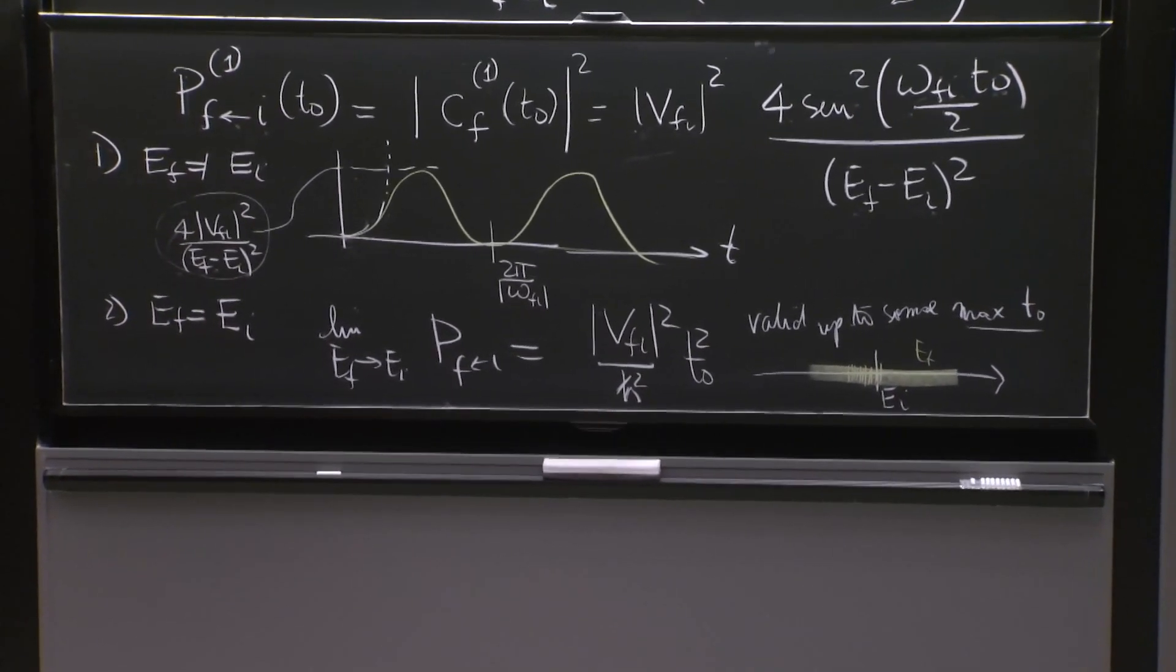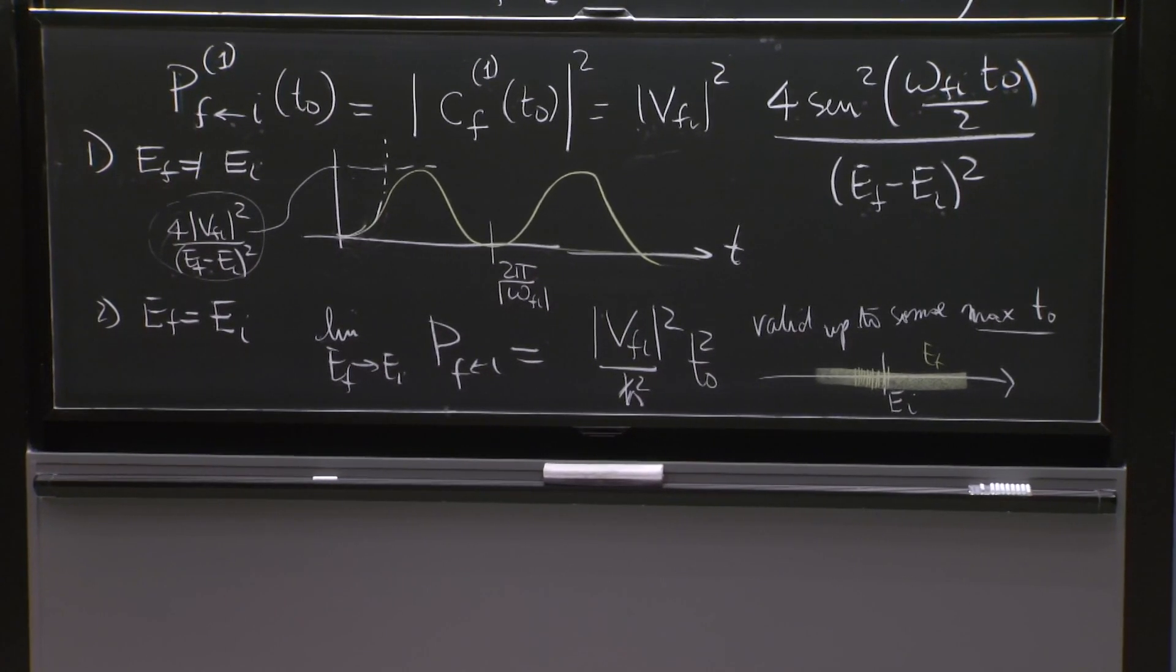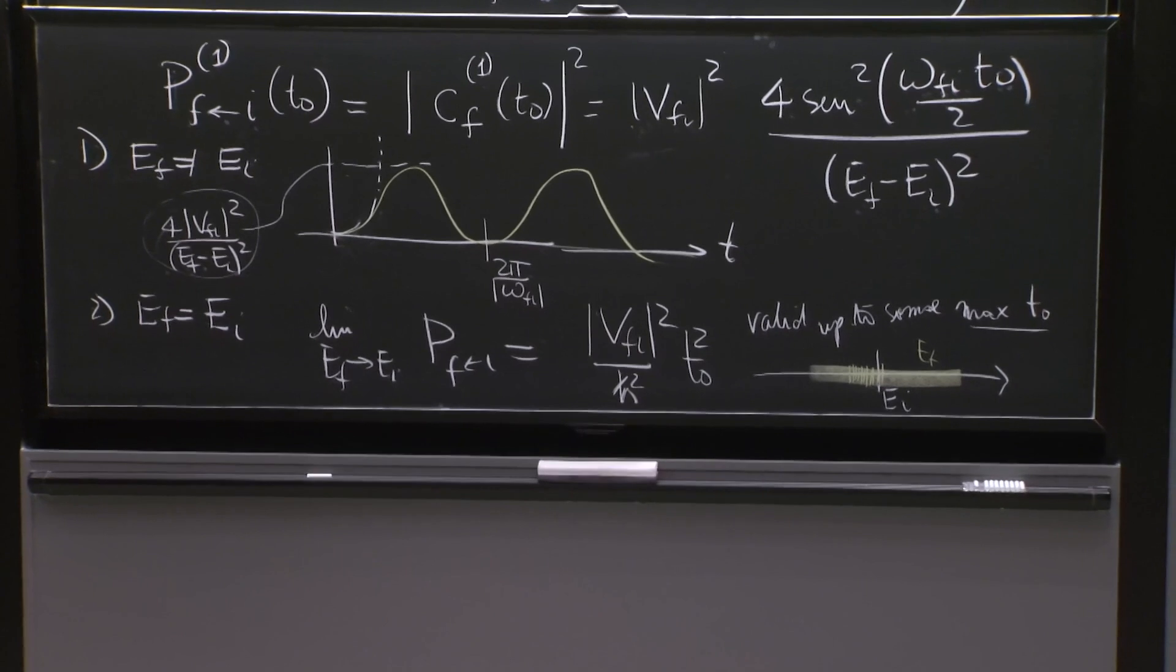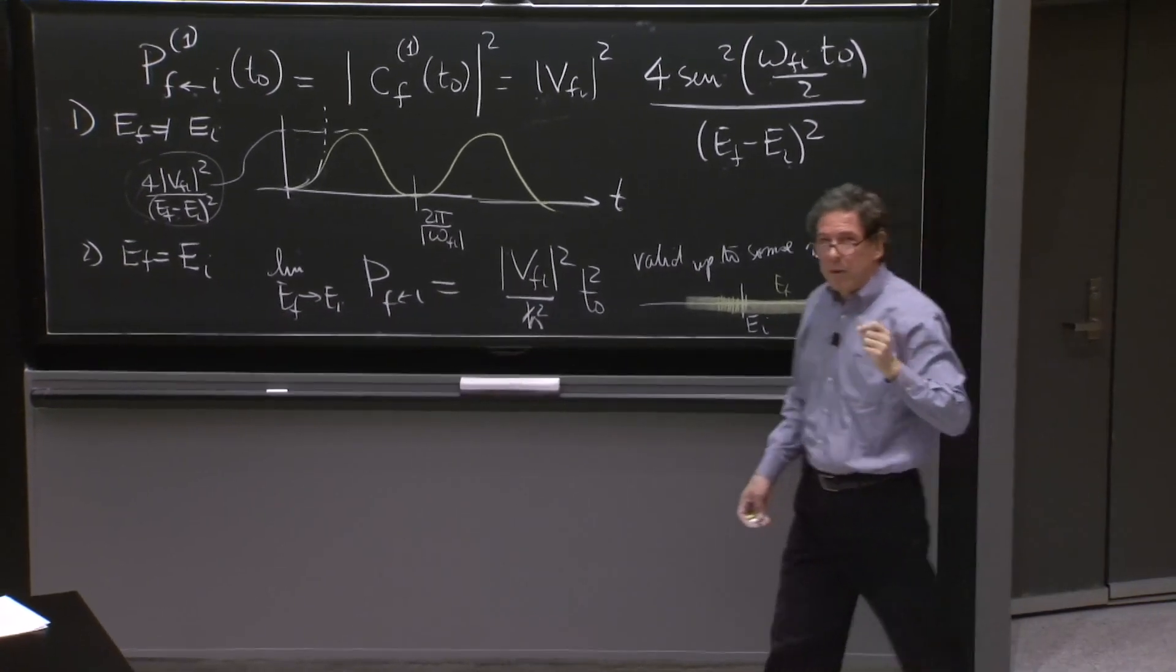So this will be considered to be, at the end of the day, energy conserving transitions. The Hamiltonian, the delta V, helps the transition happen, but doesn't supply energy at the end of the day. So this is what we're getting to.